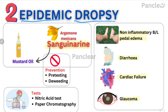To prevent epidemic dropsy, we do pre-testing — we test the oil to see whether there is a toxin. If there is a toxin, we can prevent this disease. Another method is de-weeding: removing Argemone mexicana from the mustard oil crop. There are basically two tests: the nitric acid test and the paper chromatography test. Between the two, paper chromatography is the most sensitive test.